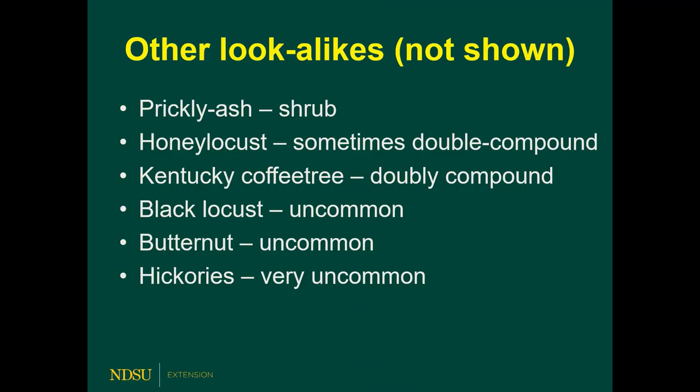There are a few more lookalikes worth mentioning briefly. Prickly ash is a native shrub often found on the edge of forests — as the name implies, it has thorns. Honey locust is fairly common in urban areas, but its compound leaf is often doubly compound and it has alternate branching. Kentucky coffee tree has also become more common in recent years, but similar to honey locust it has alternate branching and a doubly compound leaf. Black locust is very uncommon in North Dakota and has very thorny twigs. Butternut is similar to black walnut but with elongated nuts. Hickories are almost as rare as black locust in North Dakota and also have alternately arranged compound leaves.